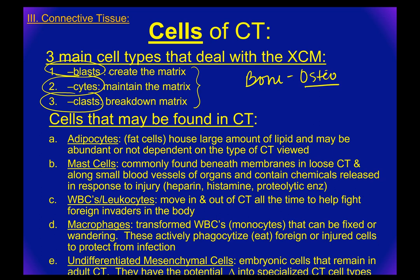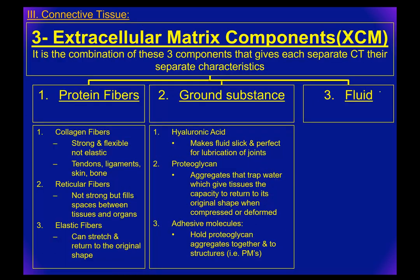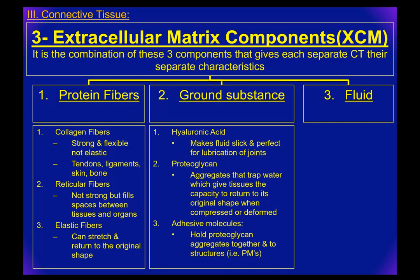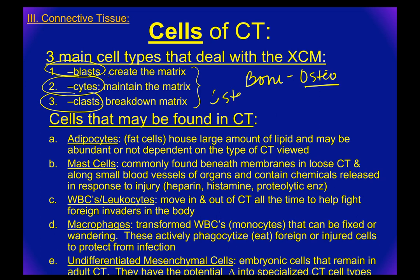Blasts build. Osteoblasts build the matrix — they're the ones responsible for creating the matrix that the bone cells, the osteocytes, are going to sit in. You also have chondroblasts, because chondro means cartilage, so they build the cartilage matrix instead of the bone matrix.